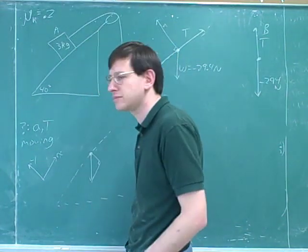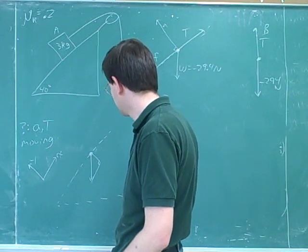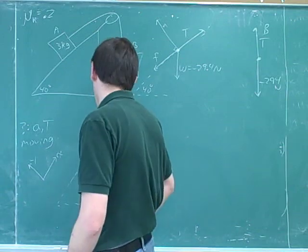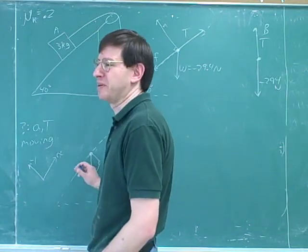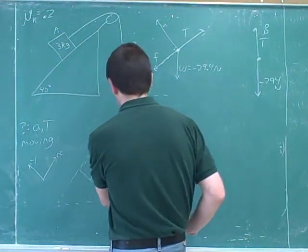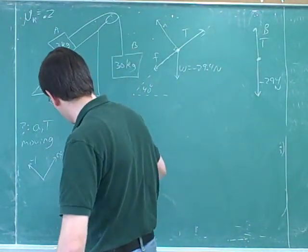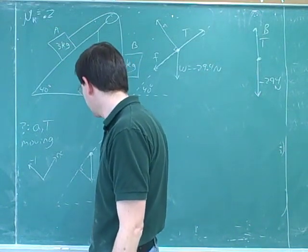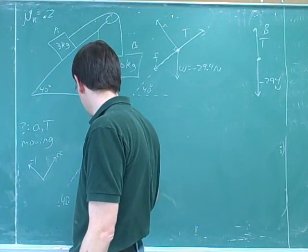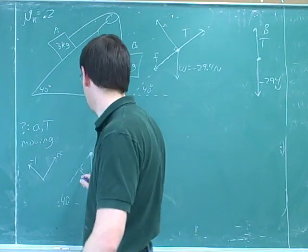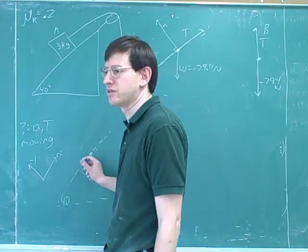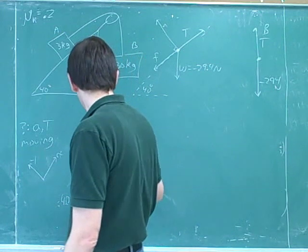Drawing below the line makes the angle a little bit easier to work with. We should focus on this angle because it matches the number we were given — the 40-degree angle down here — although you could use the 50 if you're careful about it.